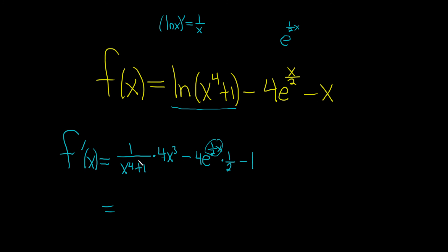Alright, last thing to do maybe is put this upstairs. So 4 x cubed over x to the 4th plus 1. And then, oh, look at this. You simplify 1 half times 4 is 2. We have e to the 1 half x. We have a minus 1 here. And that would be the final answer.